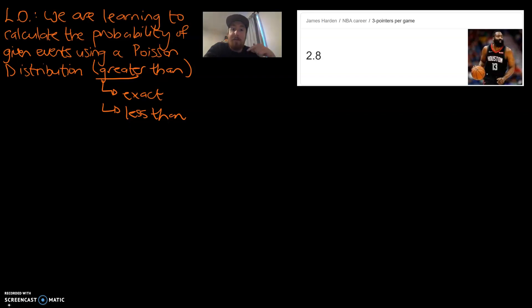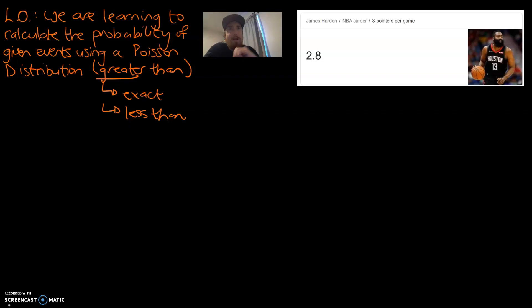Today we're doing the more complicated version where we're finding the probability of a greater than event. To help us with our explanation and our context, I've got some stats about James Harden who plays with the Houston Rockets. So let's say I've gone to the Toyota Center in Houston and I'm here to watch James Harden. I wanted to know what is the probability that he lands five or more three-pointers in that game. I found out from some research that he has, on average throughout his career, 2.8 three-pointers per game.